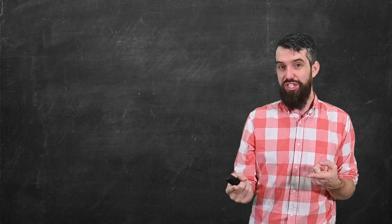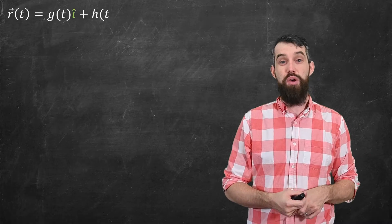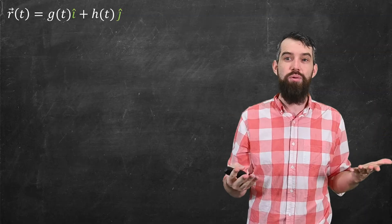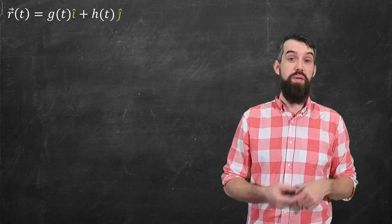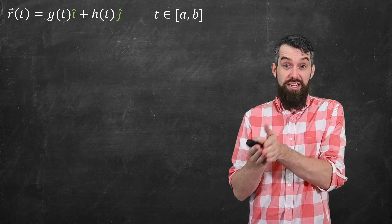Now, this whole concept is somewhat analogous to what we did back with curves. So previously, I might have talked about a curve r(t) now. A single parameter of t in the plane would be g(t)i + h(t)j. And here my t would be between two values, say a and b.